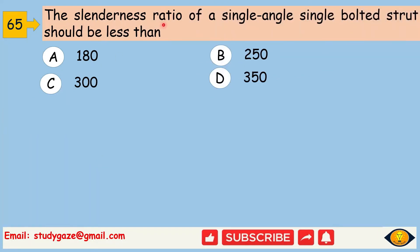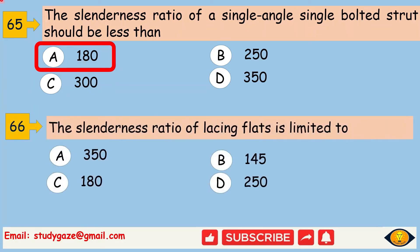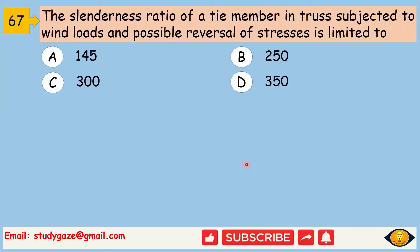The slenderness ratio of a single angle single bolted strut should be less than 180. Next, the slenderness ratio of the lacing flats is limited to 145. Next, the slenderness ratio of a tie member in a truss subjected to wind loads and possible reversal of stresses is limited to 350.